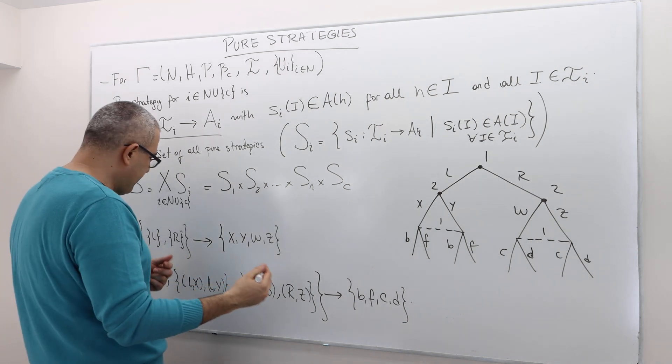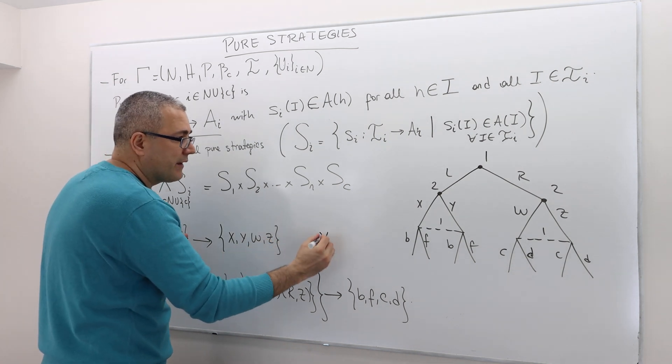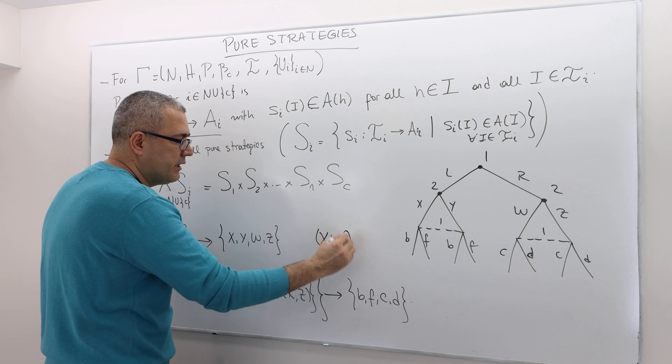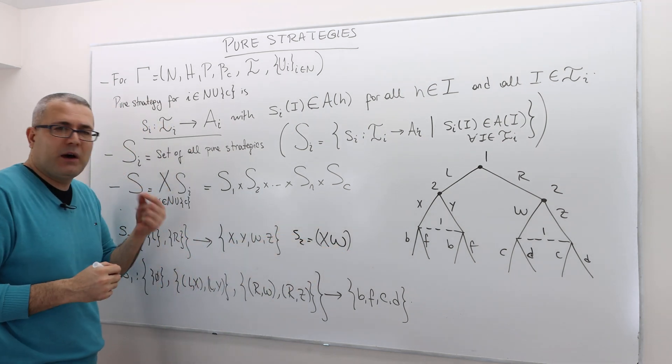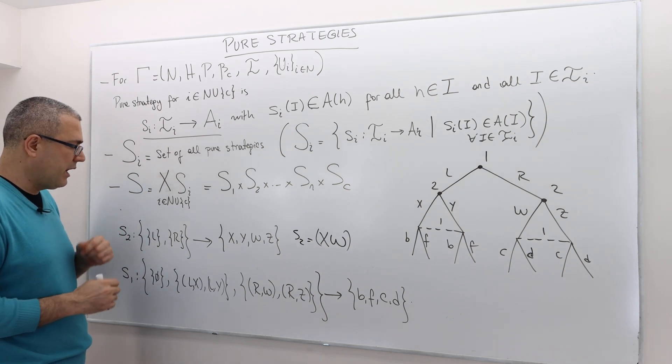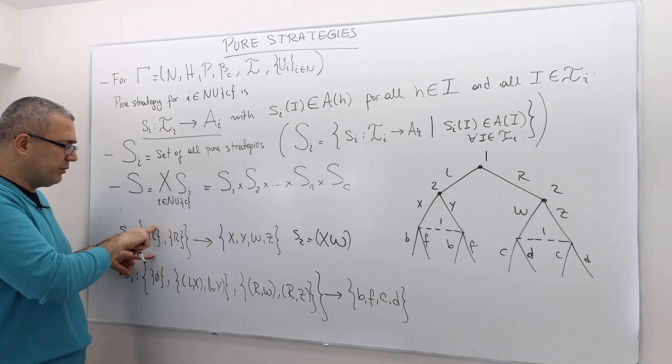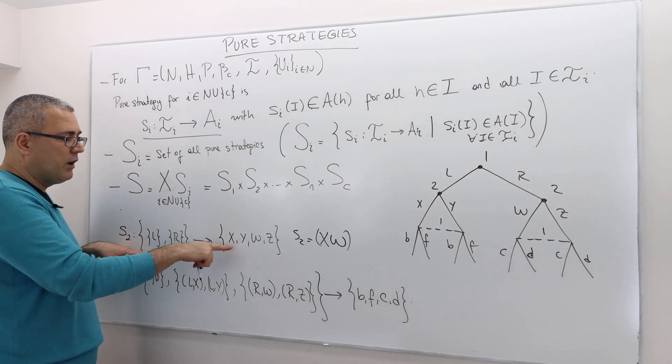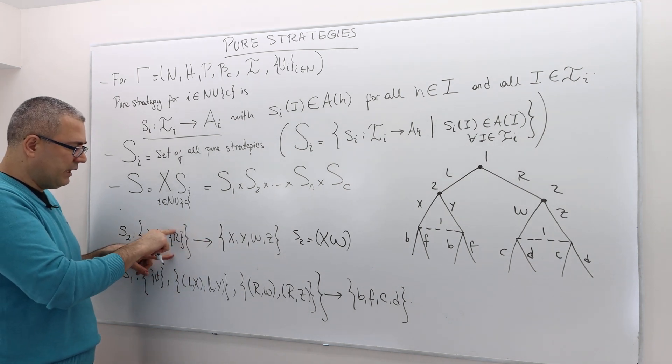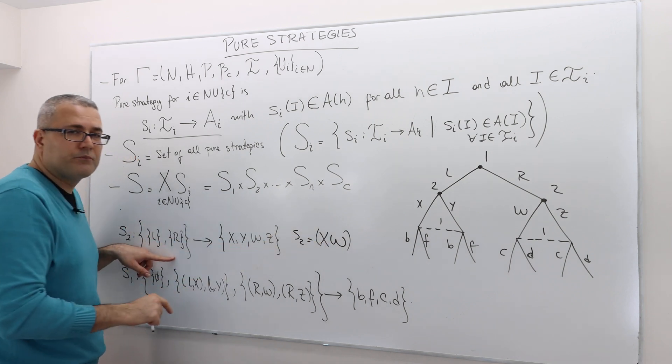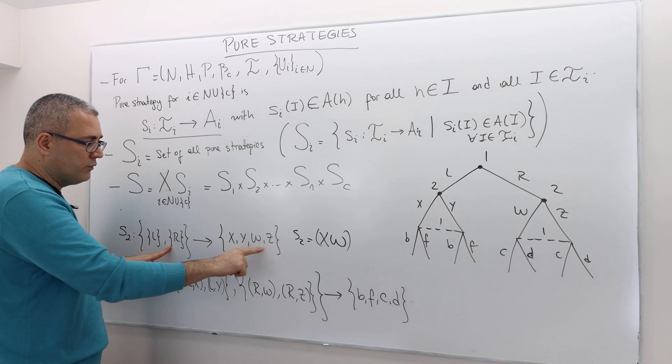But for example, one such strategy for her is, for example, X, W. So I'm going to denote it by X, W. What does that mean? So this is like S2, one possible strategy for player two. It says, map this info set, meaning whenever player one plays left and you observe that, you have to play X, and whenever player one moves right, meaning map this to W. So exactly, you can map left to X, map right to W.